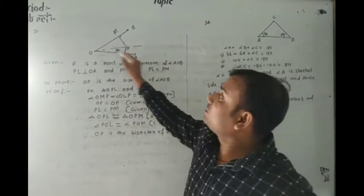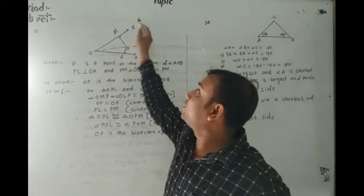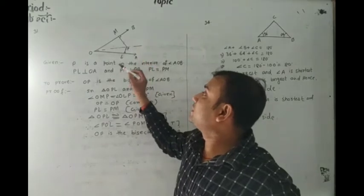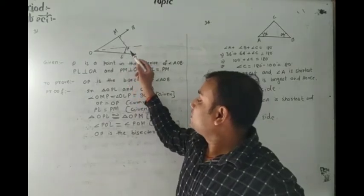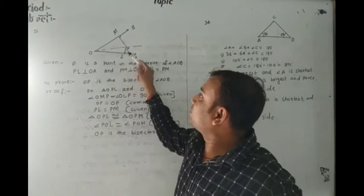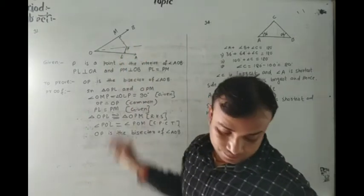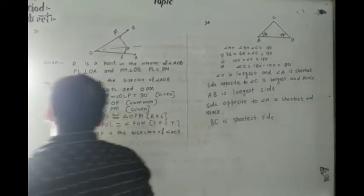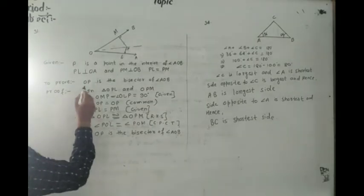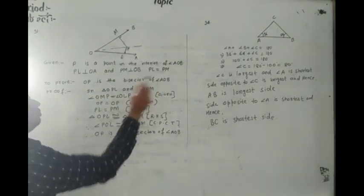Prove that OP is the bisector of angle AOB. That is, angle POL equal to angle POM. To prove: OP is the bisector of angle AOB.